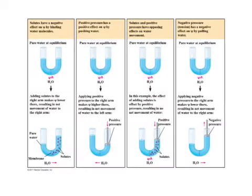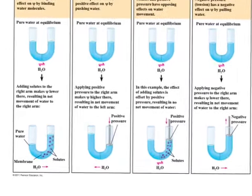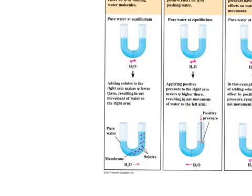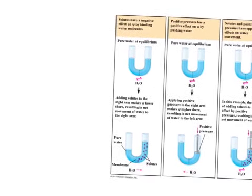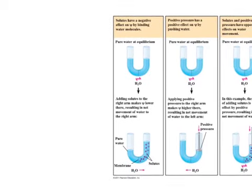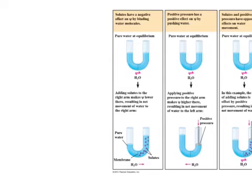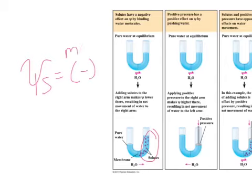I have four U-tube apparatus scenarios here, and we're going to look at each one individually. In the first scenario, I've added solutes to one side of the tube. By adding solutes to one side, that's going to have a negative effect — it's going to make my solute potential more negative. The solute dissolves in the water, disrupts the intermolecular forces, so there's less free water. That reduces the water's capacity to move.